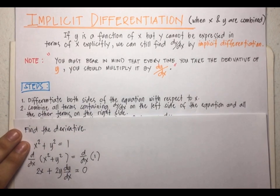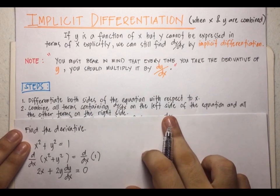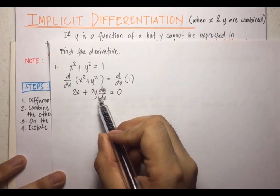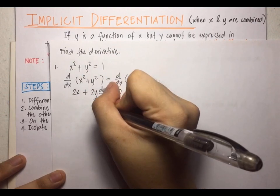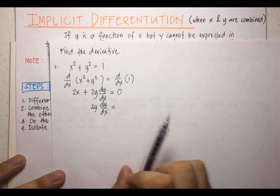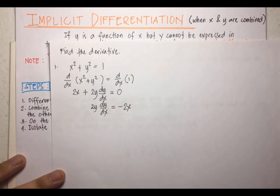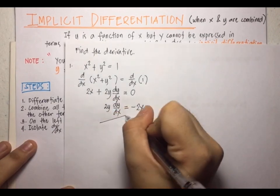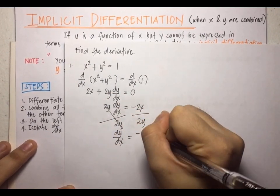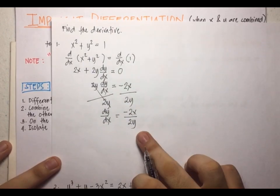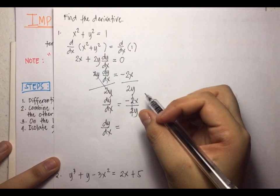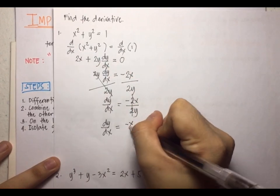For step two, we combine terms. We already have 2y · dy/dx on the left side, so we transpose 2x to the right side, making it negative 2x: 2y · dy/dx = -2x. Then we divide both sides by 2y. Our derivative is -2x/2y, which simplifies by canceling 2, giving us dy/dx = -x/y.